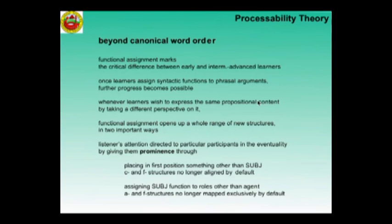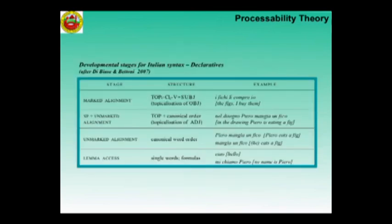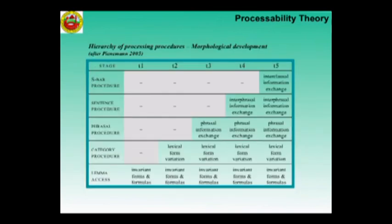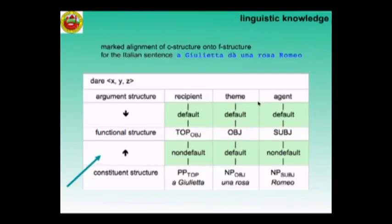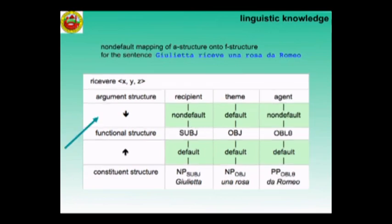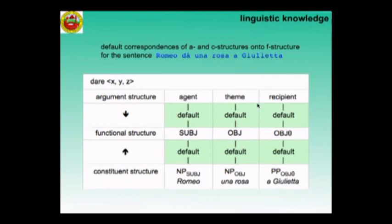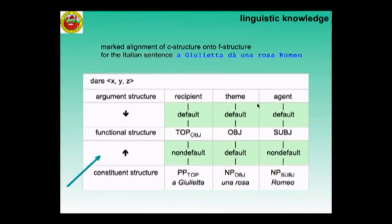When they wish to express their propositional content by taking a different perspective on it, functional assignment opens up a whole range of new structures, in two important ways. By placing in first position something other than the subject, you have the topic hypothesis. By assigning subject function to roles other than the agents, you have the lexical mapping hypothesis.